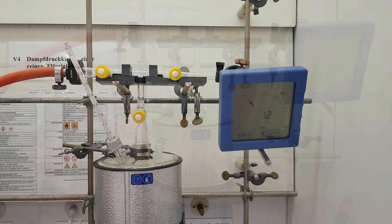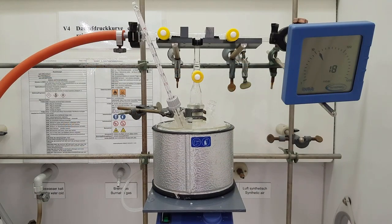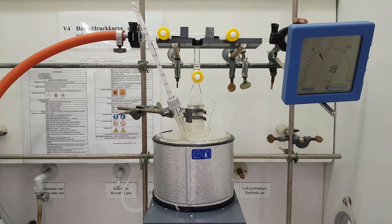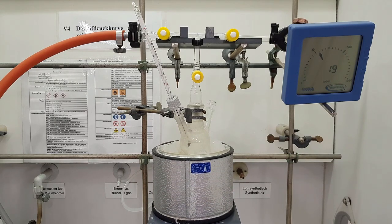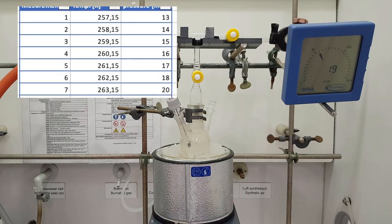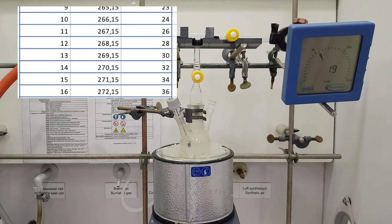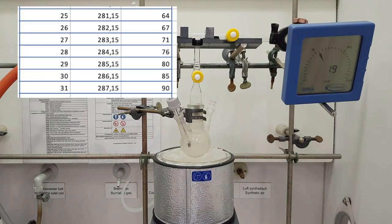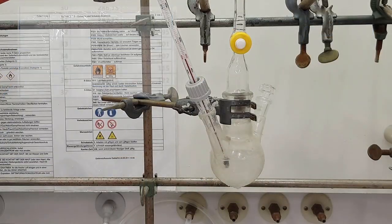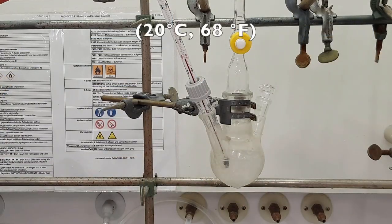The cold bath can now be lowered under the round bottom flask. Both vapor pressure and temperature will slowly increase. Keep note of the values in steps of 1 degree Celsius until the temperature of the liquid has reached 20 degrees Celsius.